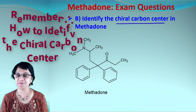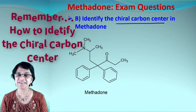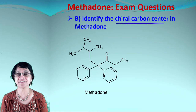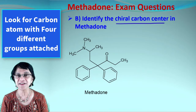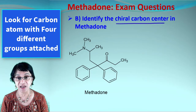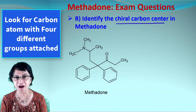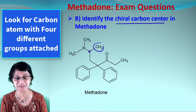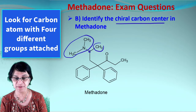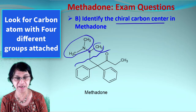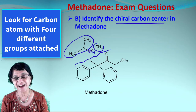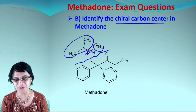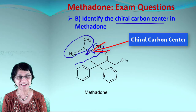The next question asks us to identify the chiral carbon center in methadone. As discussed in the taxol and dexamethasone videos, a chiral carbon is one with four different groups attached. Looking at the structure, you can spot the chiral carbon: one group is CH3, one is the dimethylamine group, one is the large structure shown, and the fourth — not explicitly shown — is a hydrogen. That carbon with four different groups attached is the chiral center.